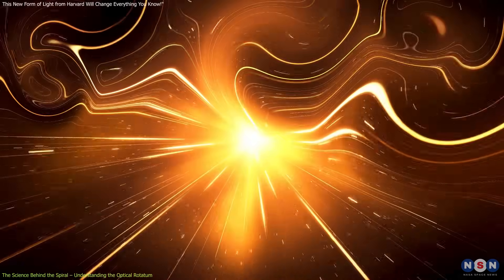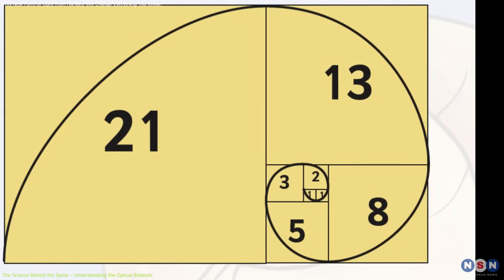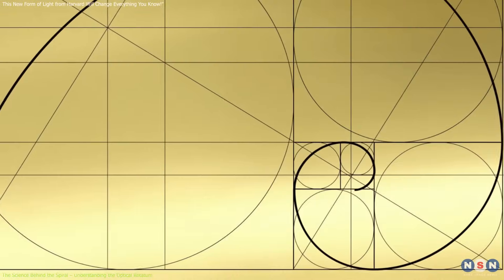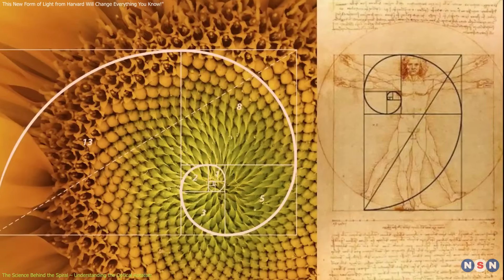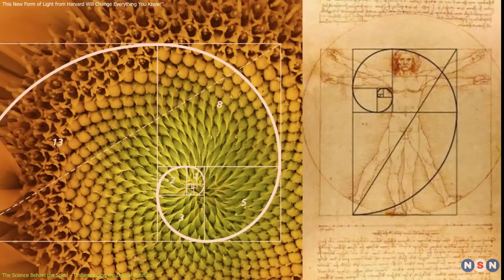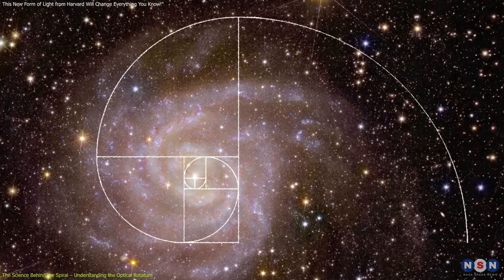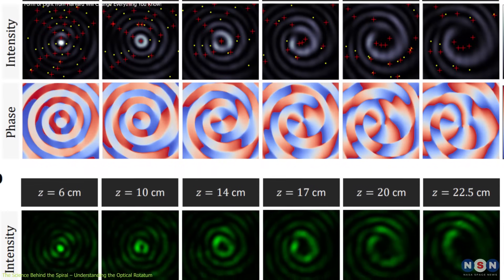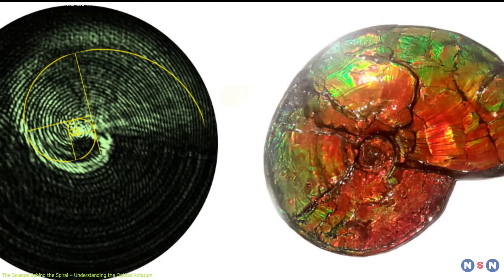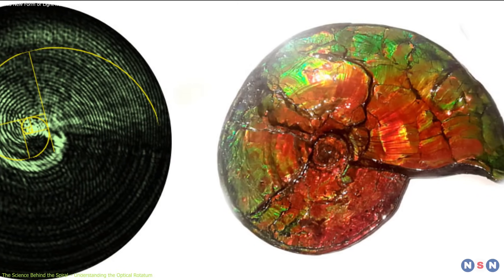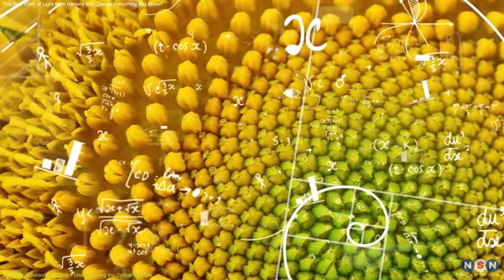The resulting beam doesn't just twist, it evolves in a way that reflects the mathematical elegance of the Fibonacci sequence. This sequence, and the associated golden ratio, are known to describe growth patterns in various natural systems, from the arrangement of leaves on a stem to the spirals of galaxies. The optical rotatum's adherence to this pattern suggests that light can be structured to mimic the fundamental geometries of nature, providing a new tool for exploring the interplay between physics and biology.